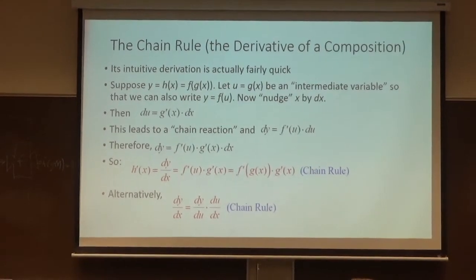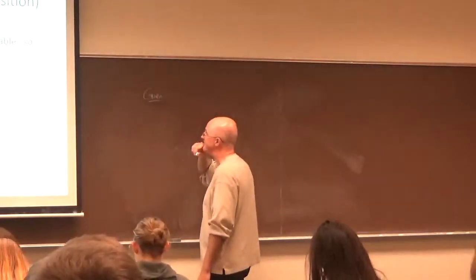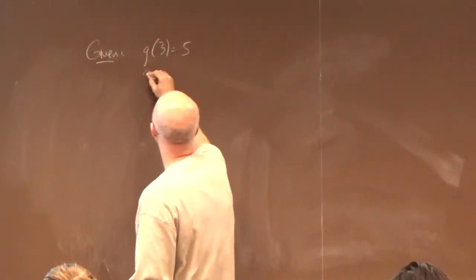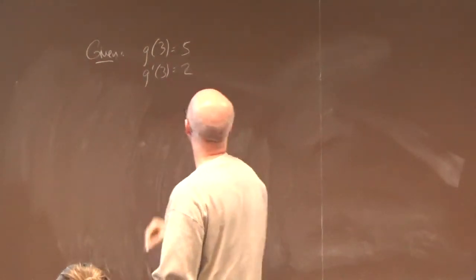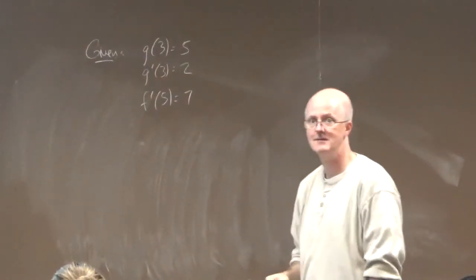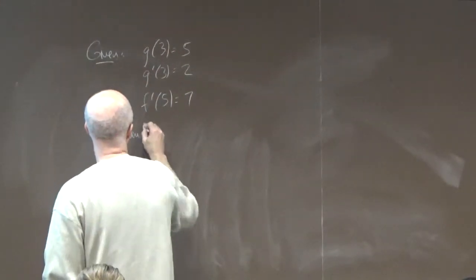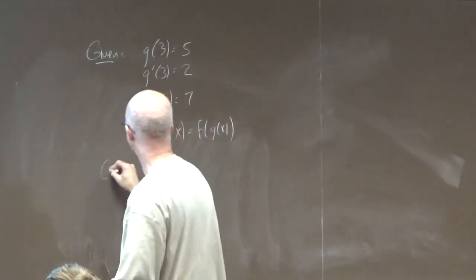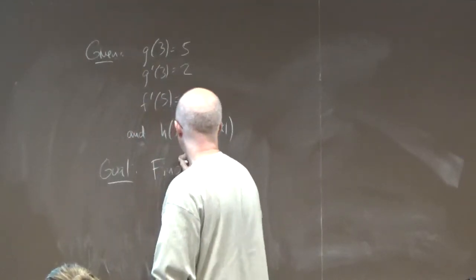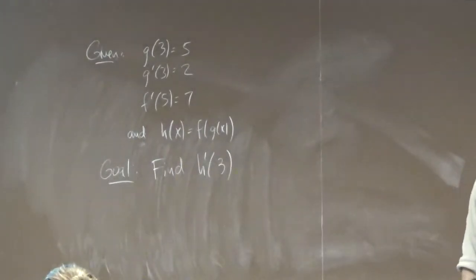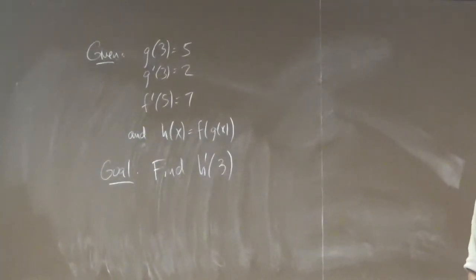You might be given that perhaps g of three equals five, g prime of three equals two, and you might be told that f prime of five equals seven. Finally, you might be told that h of x is f of g of x. And your goal is to find h prime of three.